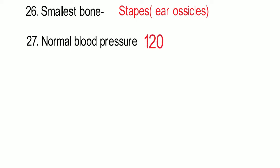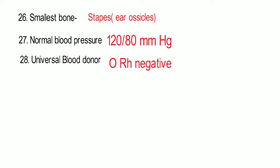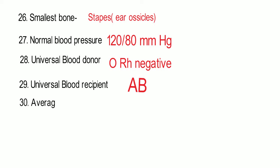Normal blood pressure is 120/80 mmHg (millimeters of mercury). The universal blood donor is O negative blood group. The universal blood recipient, or universal blood acceptor, is AB blood group. Average body weight is 70 kg.